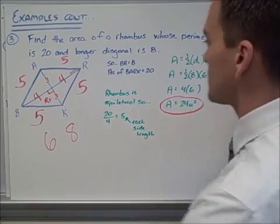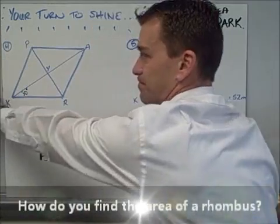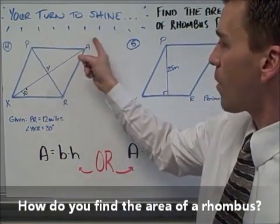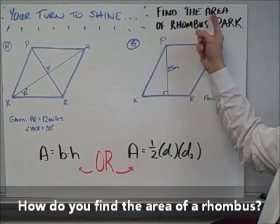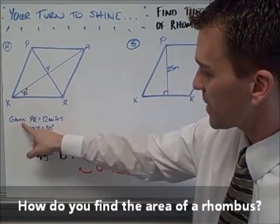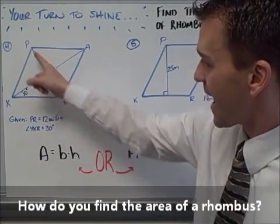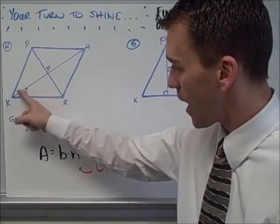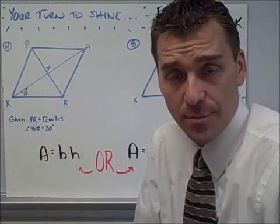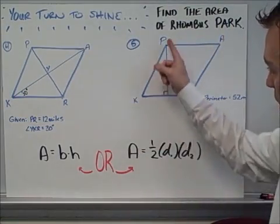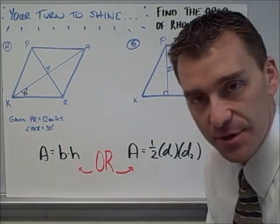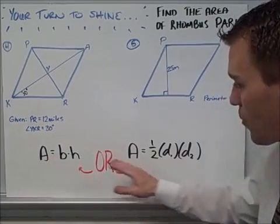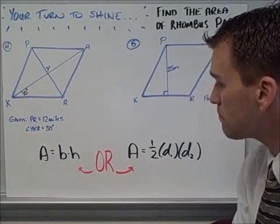Two more examples are presented for you to try. Rhombus PARK: in the first scenario, diagonal PR is 12 miles and angle YKR is 30 degrees — find the area. In the second scenario, the perpendicular height is 25 meters and the perimeter is 52 meters — find the area. Remember you've got two formula options; choose the right one for each scenario.